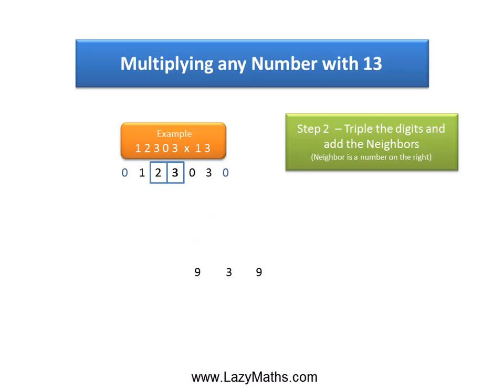The next pair 2 and 3, triple of 2 is 6 plus the neighbor 3 gives us a 9.